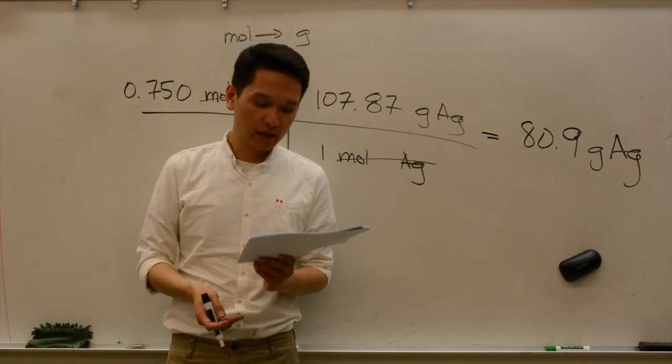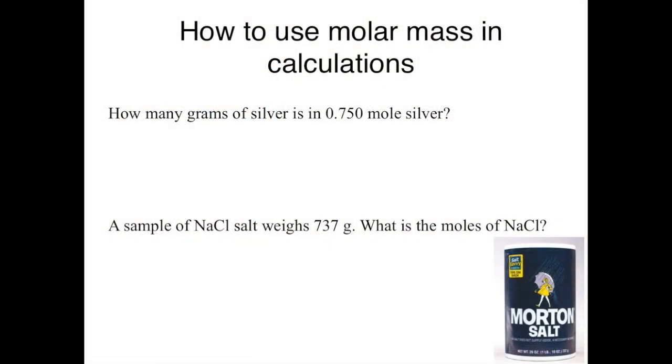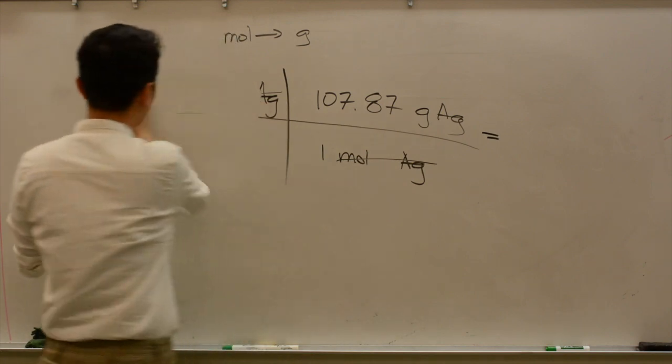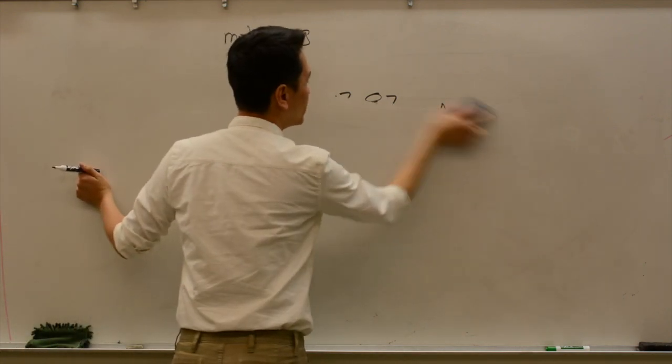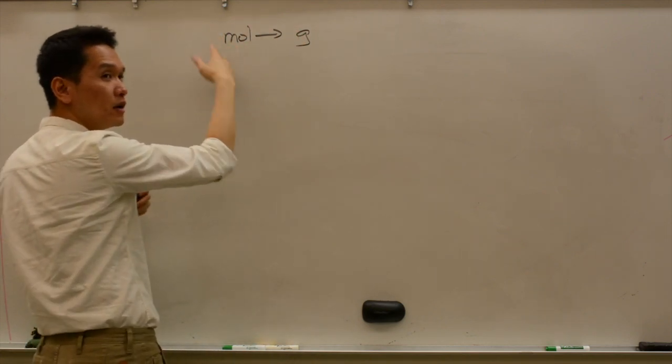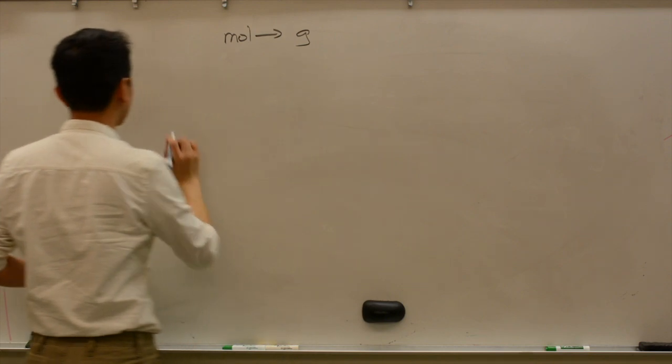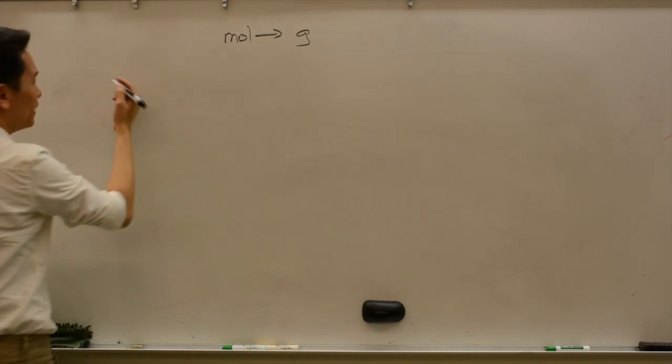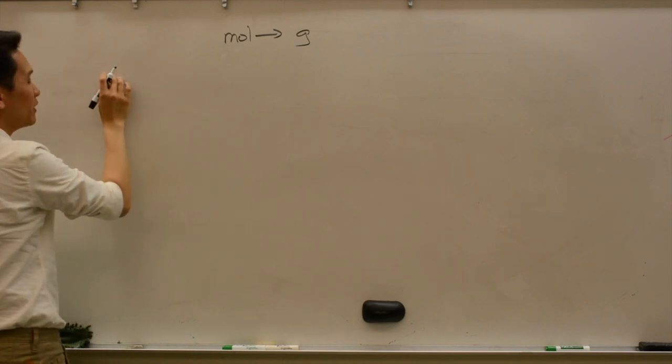So let's now do the second example here. It says a sample of sodium chloride salt weighs 737 grams. What is the moles of sodium chloride in that sample? So we need to go from what to what? In this case, we are given grams and asked for moles. So we need to go from grams to moles. So we're going to use the molar mass. Since we're going to use the molar mass, you should probably calculate it first.